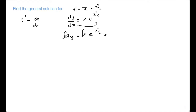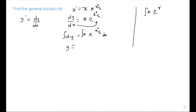Integrating now — there's no number so we put a 1. Integrating with respect to y, the integral of 1 would be y. Now this part is more complex, so we have to use the substitution method to integrate x e to the x square all over 2 with respect to x.